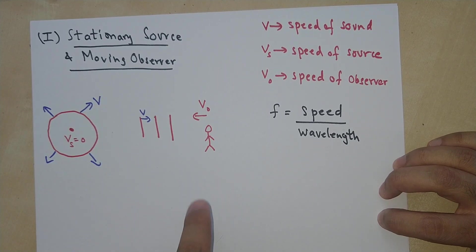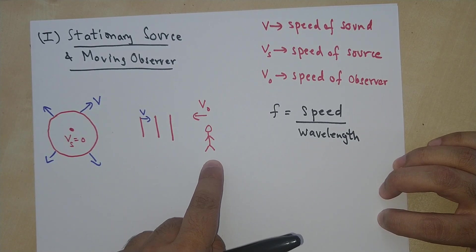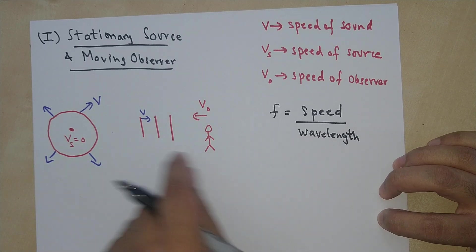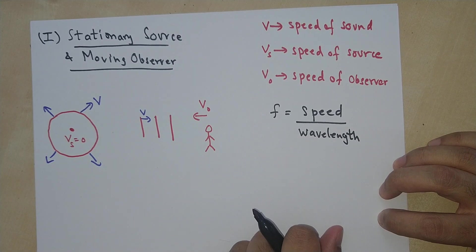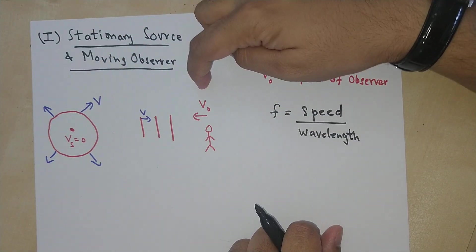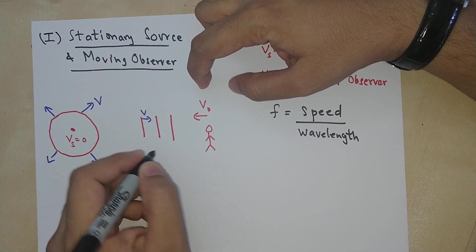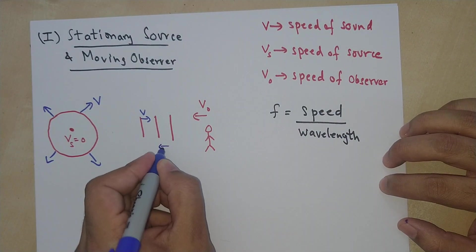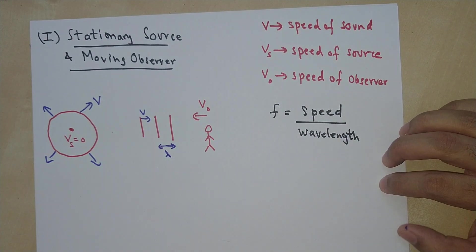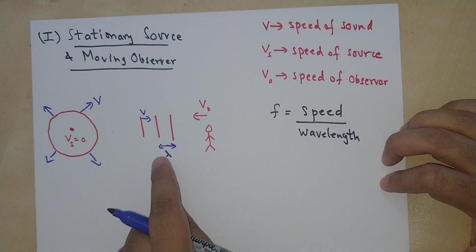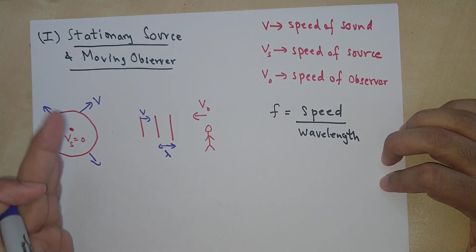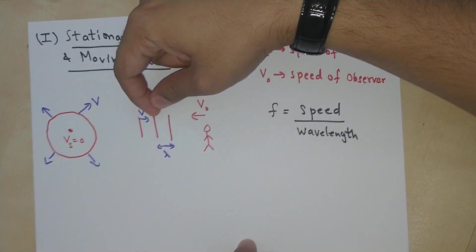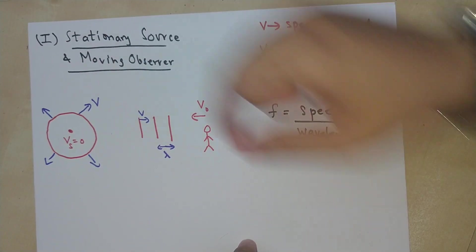So in this case, you can see that the observer is gonna see the relative speed of the observer change. It's gonna be V plus V naught. But the wavelength, the wavelength is this. The wavelength is the distance between two crests. The wavelength is going to be the same because the observer has to sweep through the same distance. It has to go from this crest to this crest. So it's going to be the same distance that the observer has to sweep through.